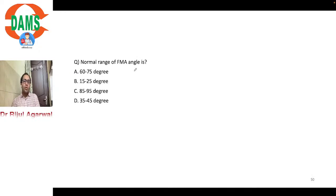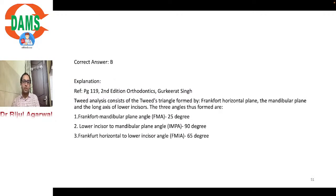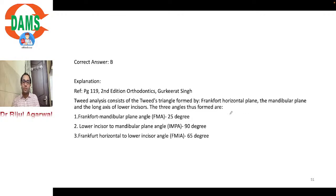Normal range of FMA angle: the correct answer is 15 to 25 degrees, given by Tweed. The average value is 15 to 25 degrees. Related: the normal incisor mandibular plane angle (IMPA) is 90 degrees; subtracting IMPA from 90 gives the FMA of 65 degrees in tweed cephalometric analysis.